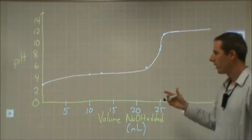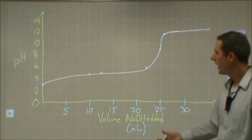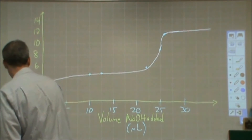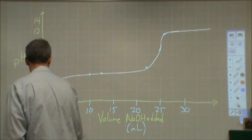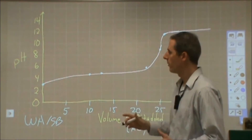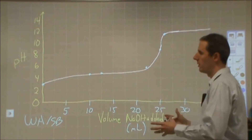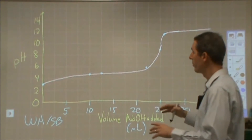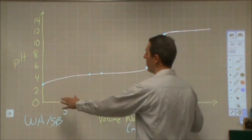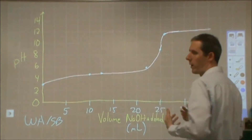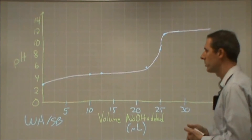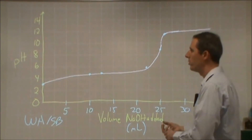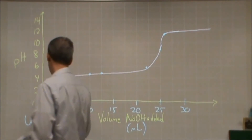We're going to go through a titration curve — specifically a weak acid/strong base titration curve. What I want to do is not go through the logistics of the mathematics behind finding the pH. Rather, I want to go through, at various points along this curve, what chemical reactions are occurring and what chemical species are present, to try and clarify that for when you do try and go through and calculate the pH.